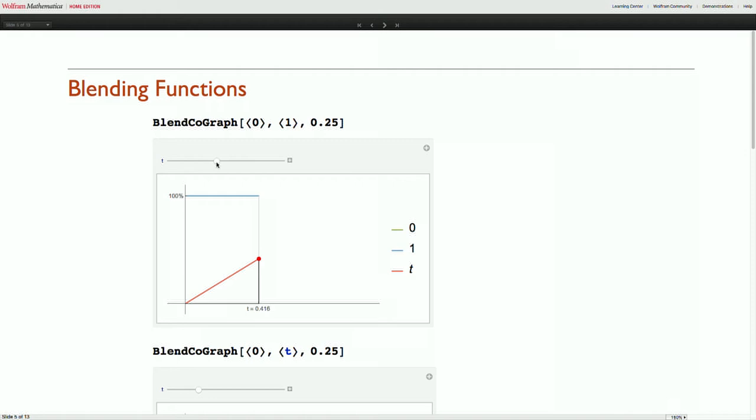This forms a linear function as you might expect. But then we can recombine this. So t is the linear function and we could say what does it mean to start like 0 and end like t.